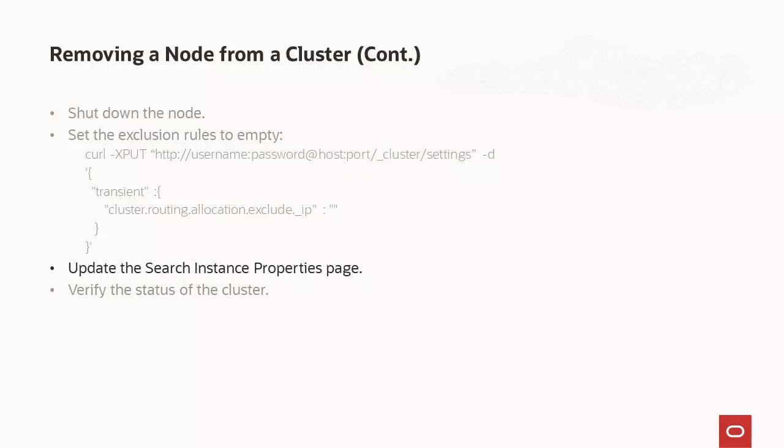On the search instance properties page, delete the row corresponding to the removed node. You can verify the status of the cluster by using the OpenSearch cluster dashboard. The cluster's status should be either green — cluster is fully operational — or yellow — some replicas are not assigned but the cluster is fully functional. Refer to the monitoring OpenSearch cluster using PeopleSoft Health Center topic in the PeopleTools 8.61 Search Technology Online Help.